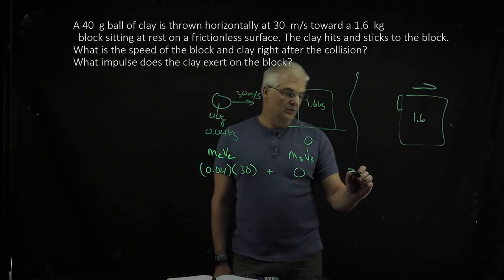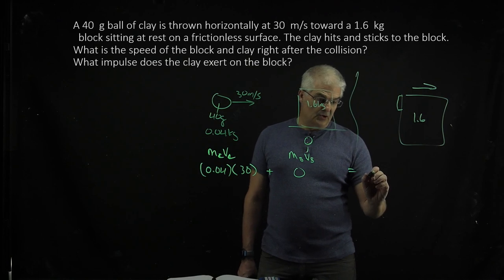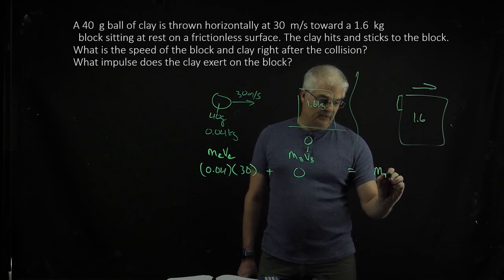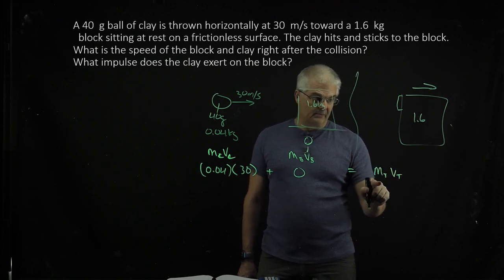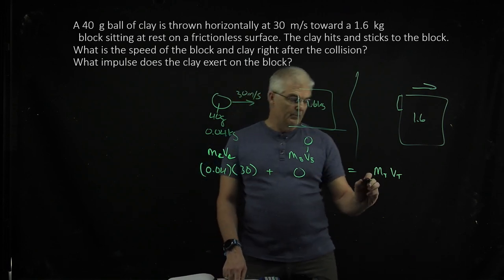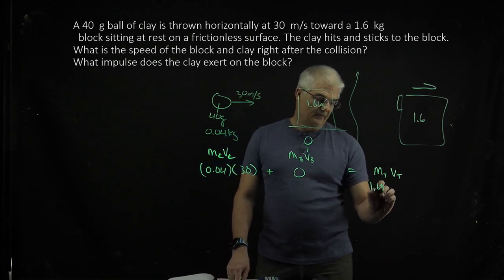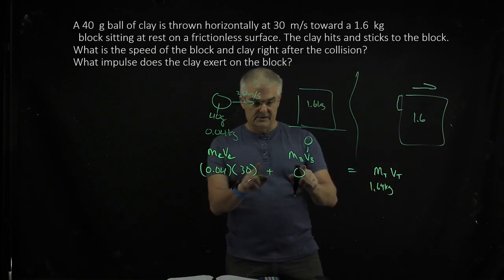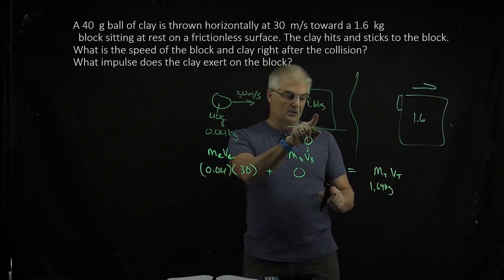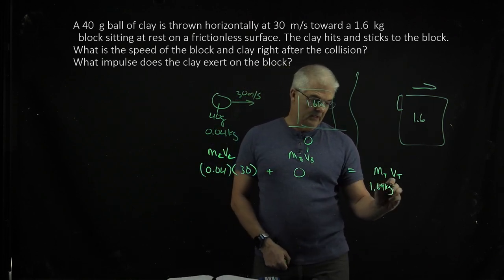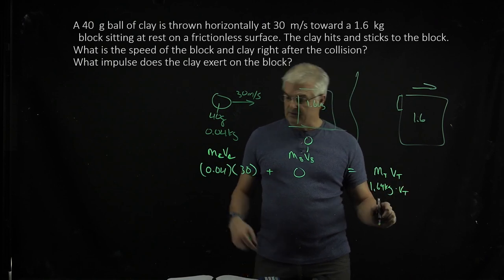right? Is equal to the mass total, I like to say, mass total times the velocity total. But the mass total is, what is it going to be? I get 1.64 kilograms, or 1.6 plus 0.04 times Vt. And so that's pretty simple math,